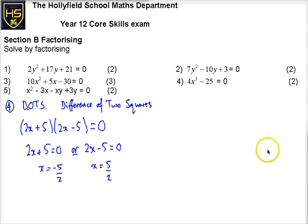So it's actually quite straightforward, but you have to spot and it only works when it's a difference of two squares. It's a subtract and both things are squares.